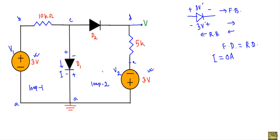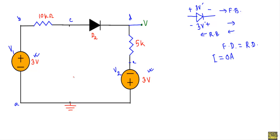Diode D1 is not conducting any current, meaning it is in the off state. When a diode is in the off state we can replace it with an open circuit, so I remove diode D1 from the network. The remaining circuit is a total series circuit. We have to calculate voltage V from this terminal to ground, which will be the sum of the voltage across the 5 kilo ohm resistor and the minus 3 volt voltage source.